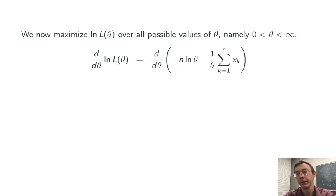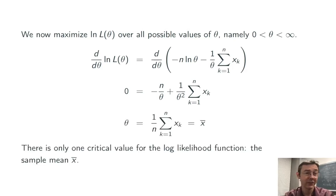So let's jump in. Let's take the derivative using our standard derivative rules. Note that we're differentiating with respect to theta here, not with respect to any of the x's. Set it equal to zero and solve for theta. In this case, we get the sample mean x bar. That's the only critical value for the log likelihood function.